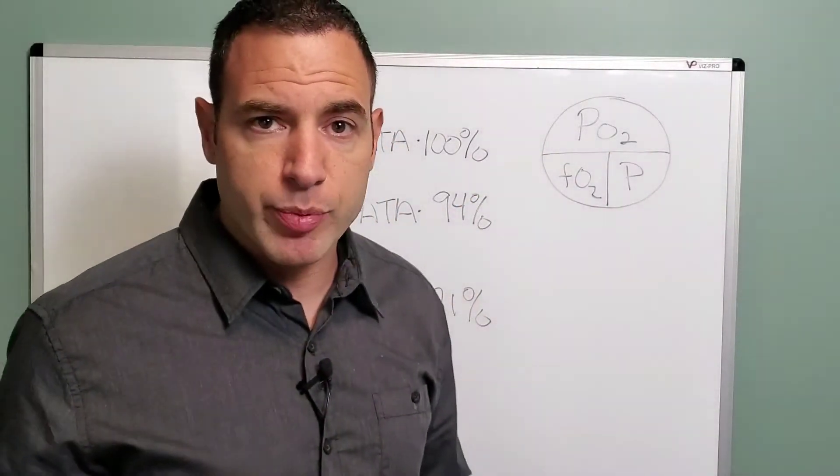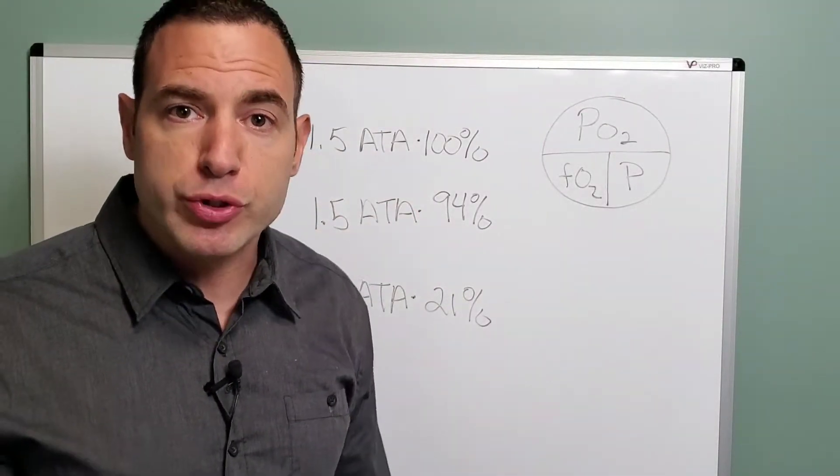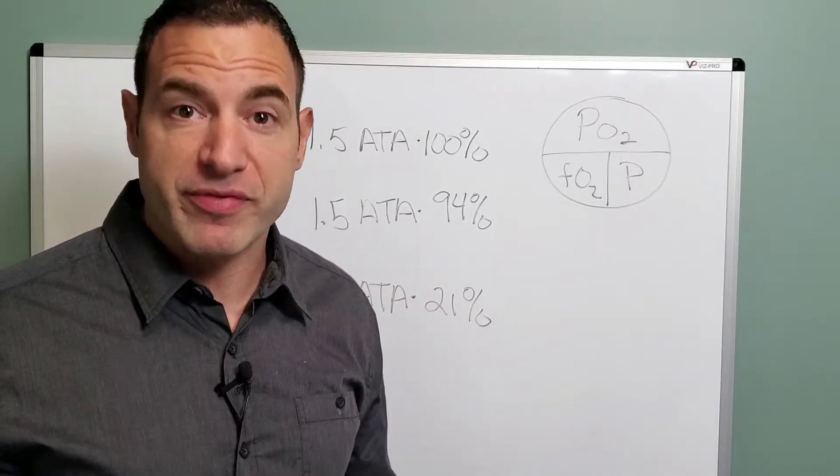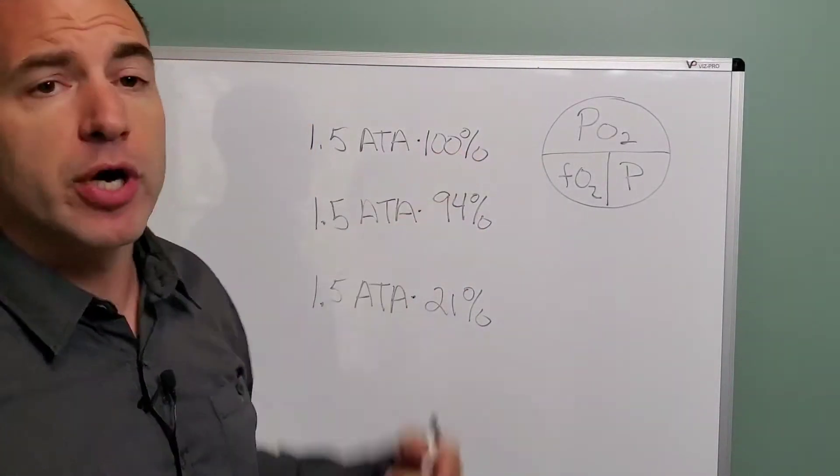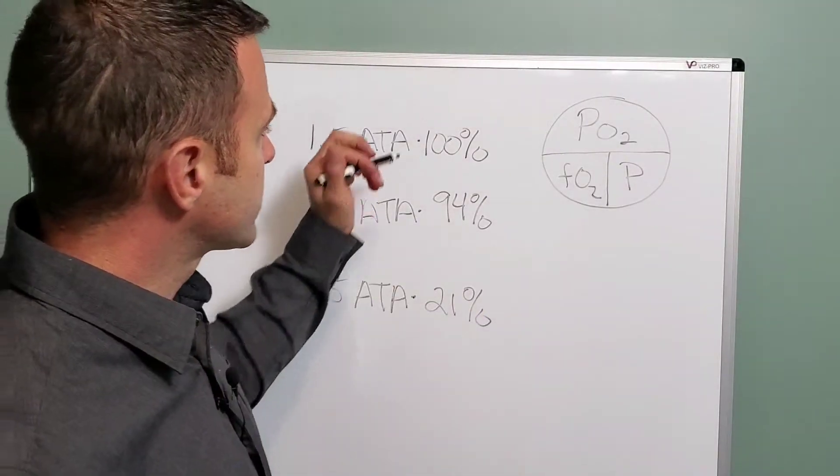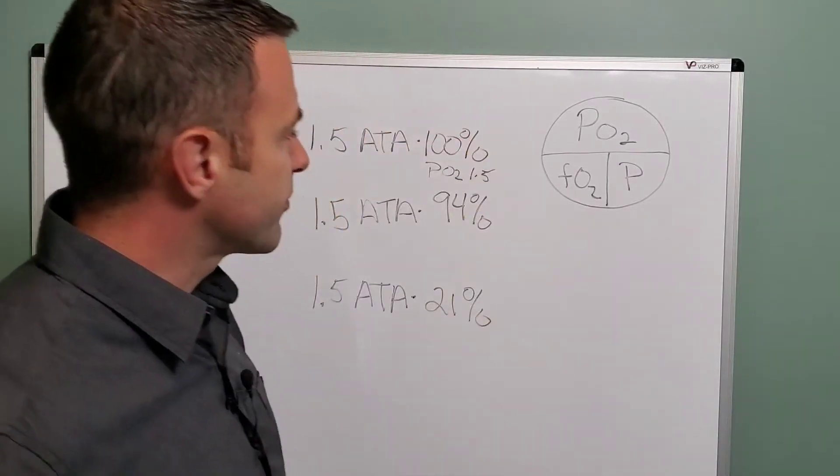In a couple examples, basically one and a half atmospheres, let's just say we wanted to get a PO2 of 1.5. We could have 1.5 atmospheres times 100% oxygen. That would give us a PO2 of 1.5.